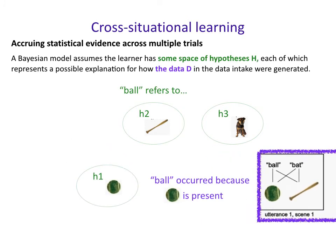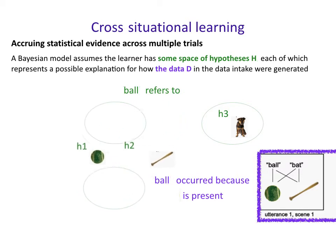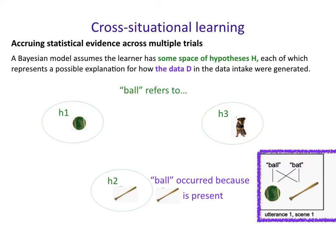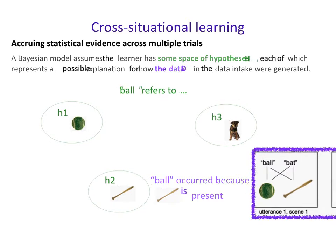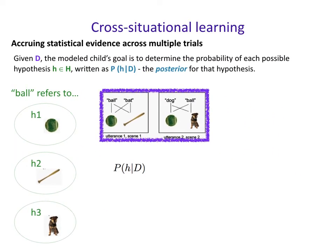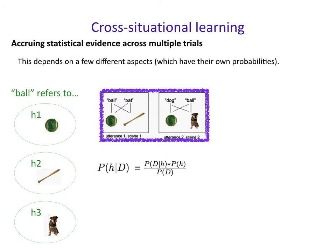Hypothesis one says the word 'ball' refers to the green object — that word occurred because that green object is present in the scene; you name the thing that's present. Given the data, the model child's goal is to determine the probability of each possible hypothesis in H. This is written as the probability of little h given D — that bar is 'given' — which is the posterior probability for that hypothesis. That's what you're trying to figure out: the probability of the hypothesis given that you've seen these data. This calculation depends on a few different aspects, each with their own probabilities, as represented in that equation.